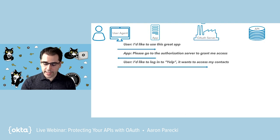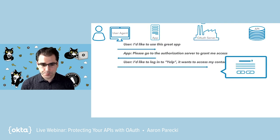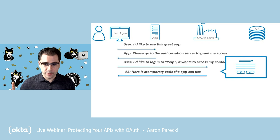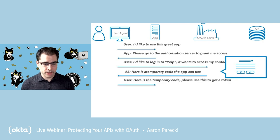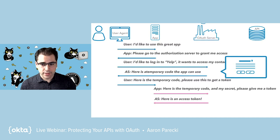The query string will say things like: this user is trying to log into this application and wants to access contacts. The OAuth server says please log in here, where the password lives for that account. Then the OAuth server will ask: do you approve this request? Assuming the user clicks yes, the OAuth server generates a one-time use code, sends it back to the user's browser, and the user's browser takes it back to the app saying: I just got this code from the OAuth server — you can use this code to now go get an access token. Behind the scenes, the app can exchange that code for an access token using its client secret.